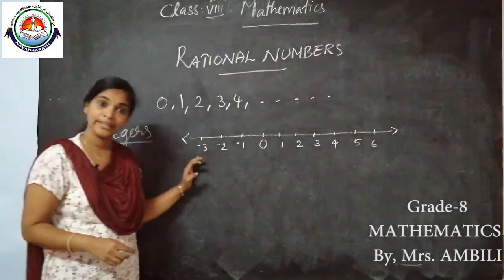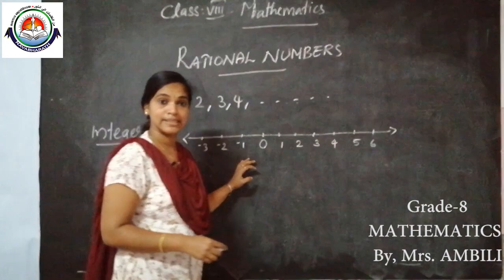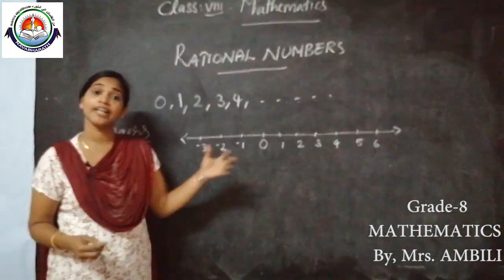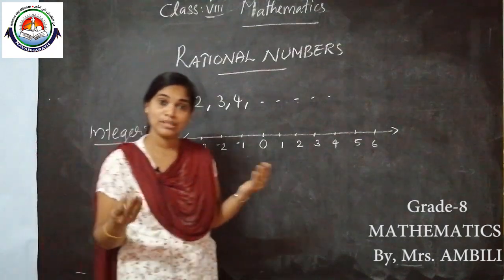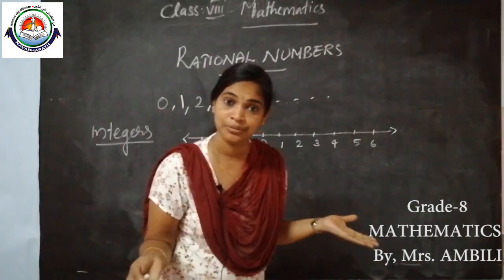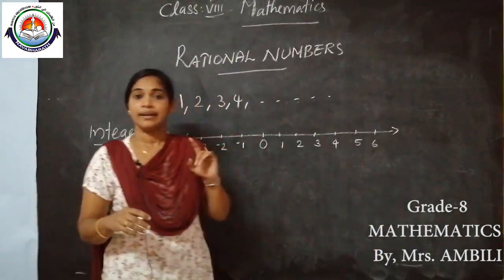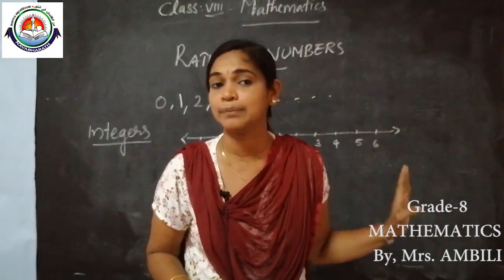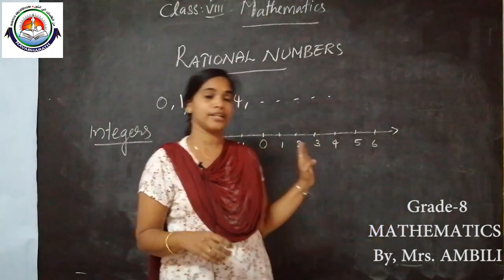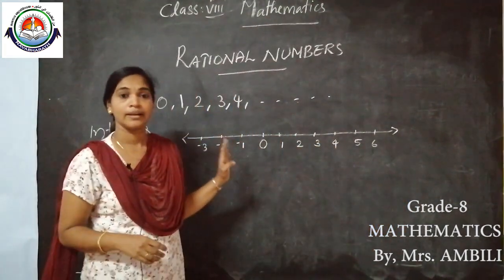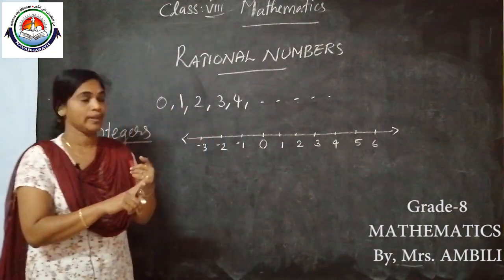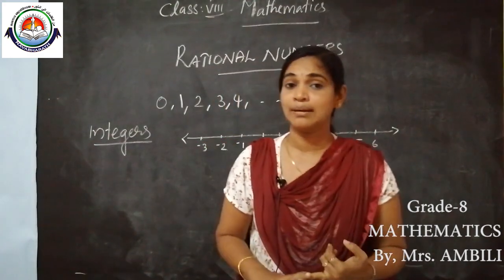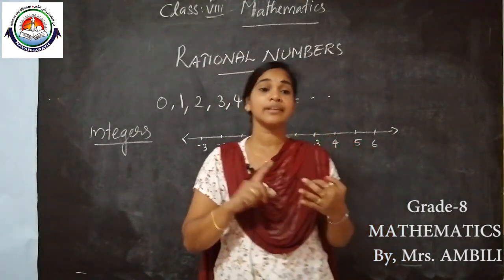Integers means including negative numbers and positive numbers. Now, one more thing — what about 0? Is 0 positive or negative? No, 0 is neither a positive number nor a negative number. So now we've talked about counting numbers or natural numbers, whole numbers, and integers.